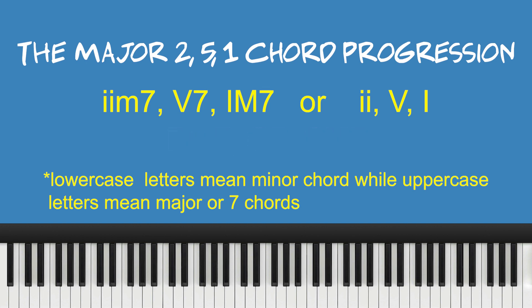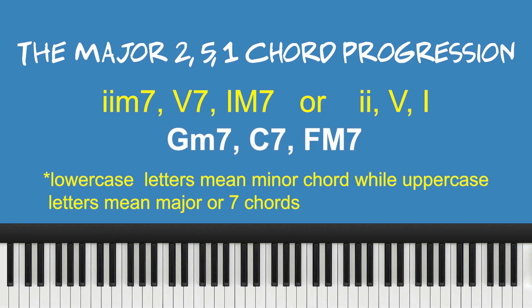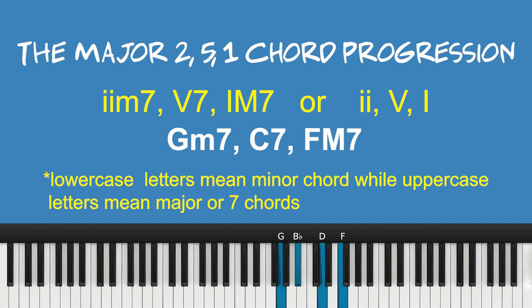Let's say you want to go to F — we want to make F the target note, so F becomes number one in the progression. We have two, five, and one, where one is going to be our target chord: F major seven. In the key of F major — F, G, A, B flat, C, D, E, F — making F major the tonic or root, the two chord is going to be a minor chord: A minor seven.